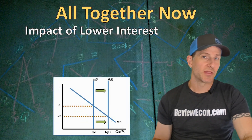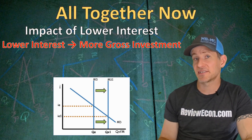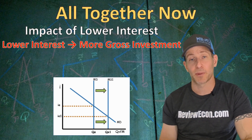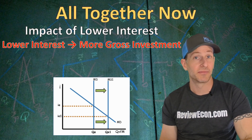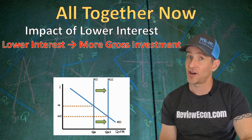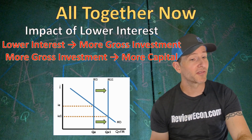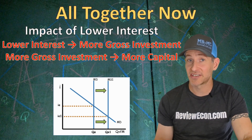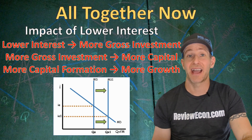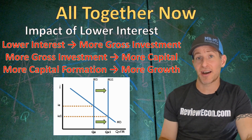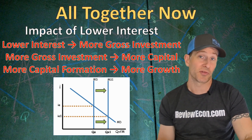When we see lower interest rates within the economy, that lower interest rate is going to lead to more gross investment, because businesses are generally borrowing money when they purchase physical capital. When interest rates are lower, it is cheaper to purchase that physical capital because they are paying less interest on those loans. More gross investment means more physical capital stock within the economy, and more capital formation means greater rates of economic growth — so the production possibilities curve shifts outward more quickly, and the long-run aggregate supply curve shifts to the right more quickly.